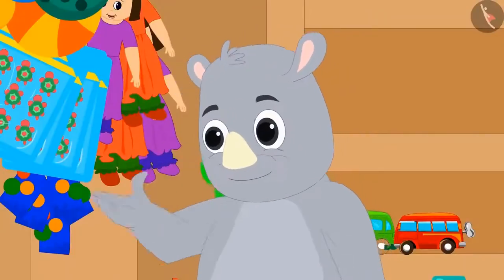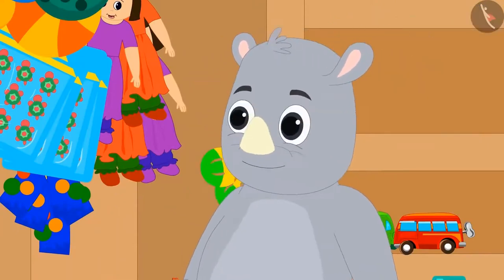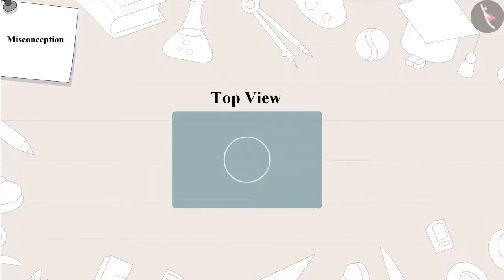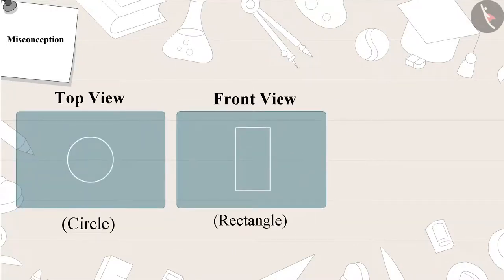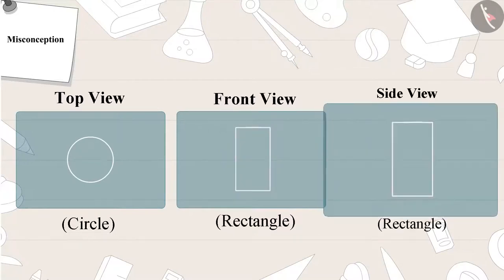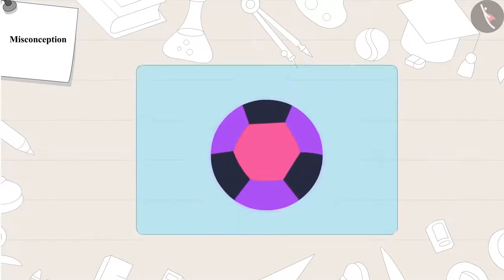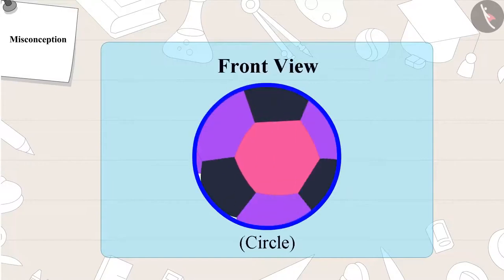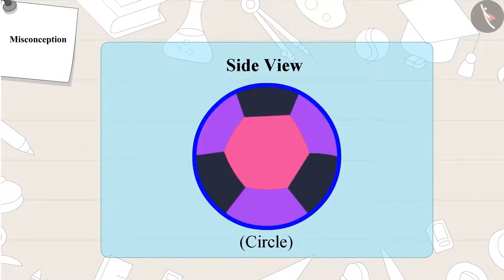Gaggoo said: this is so easy, it is a tumbler! That is a wrong answer, Gaggoo Ji. A glass is a circle only in top view; it is a rectangle in front view and in side view as well. The correct answer is a ball. A ball is a circle in front view, top view, as well as side view.